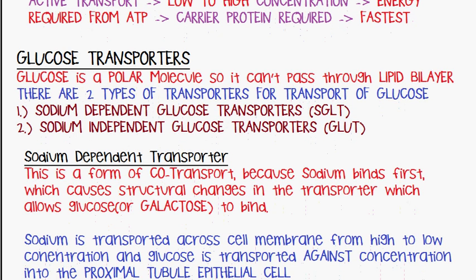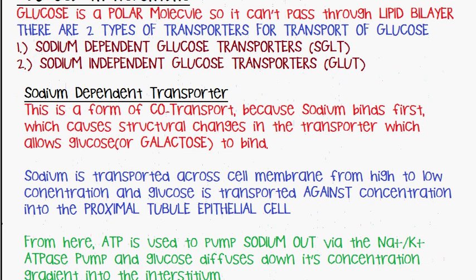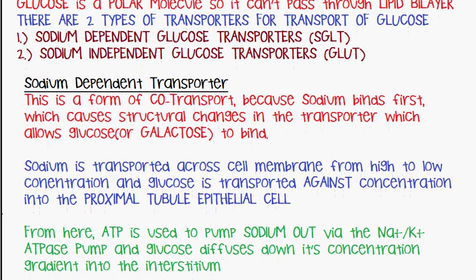You can have sodium-dependent glucose transporters, which require sodium, and sodium-independent glucose transporters as well. First, we'll talk about the sodium-dependent transporter. It's a form of co-transport. Sodium binds first, which causes a structural change in the transporter protein, allowing glucose or galactose to bind.